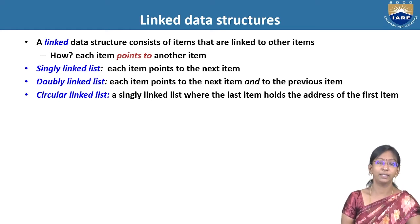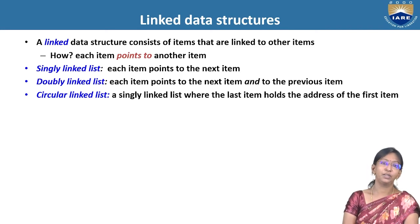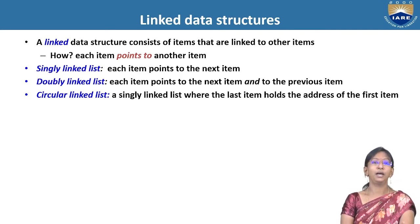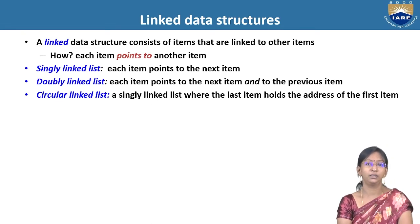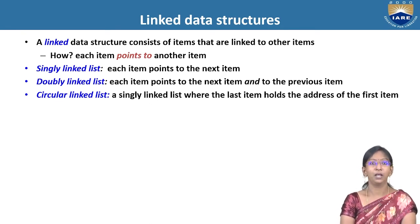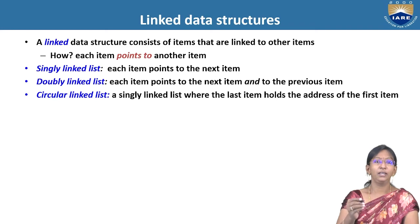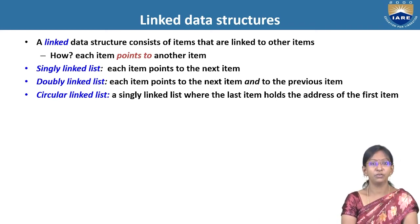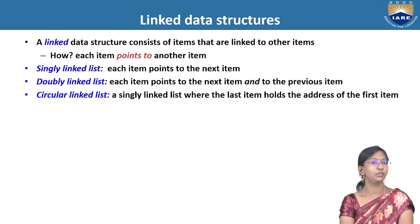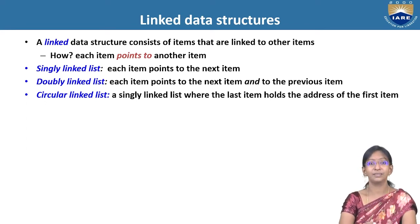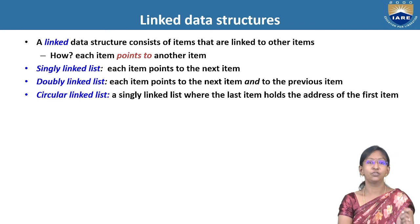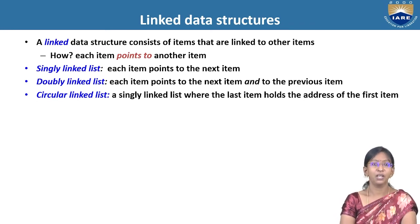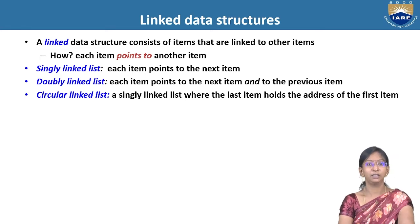Let us look at the Linked Data Structure. Linked Data Structure is a linear data structure where the items are related to one another in one-to-one cardinality. The basic difference between an array and linked list is that in arrays the elements are stored in consecutive memory locations, whereas in a linked list the data is not stored in contiguous memory locations. These linked lists are in three different categories: single-linked list, double-linked list, and circular-linked list.